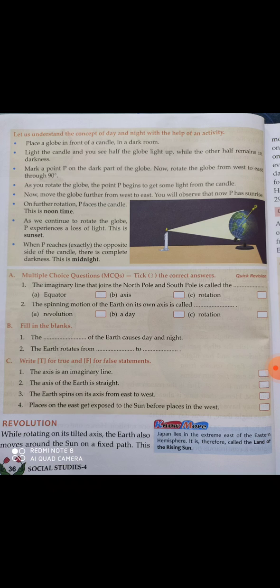So you place the candle and globe like this. What you will see is that half of the globe is covered with light and the other half is in darkness. Mark a point P on the dark part of the globe. Now rotate the globe from west to east. Last time we learned that the earth rotates from west to east.